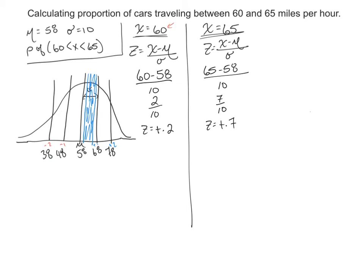Get out your unit normal table and look up the z, or the proportion that falls in the tail for z equaling .2 and .7.